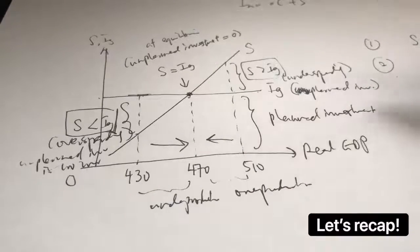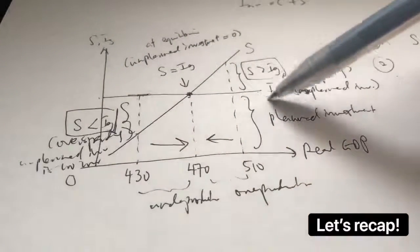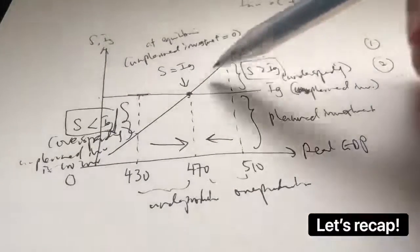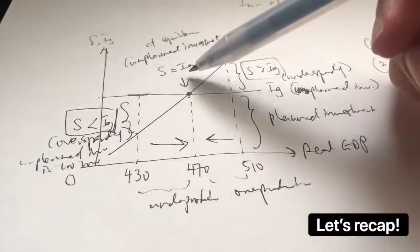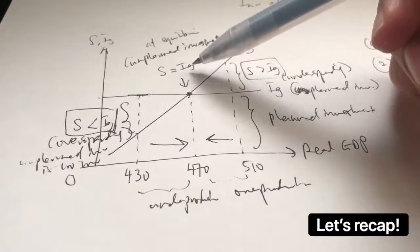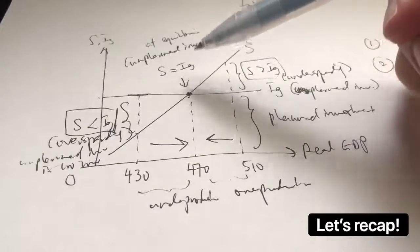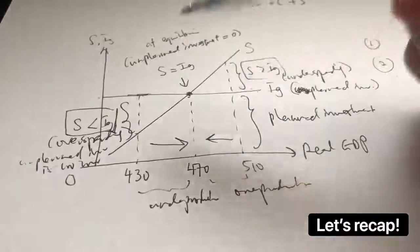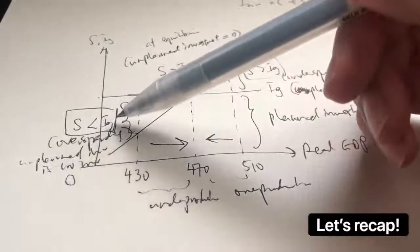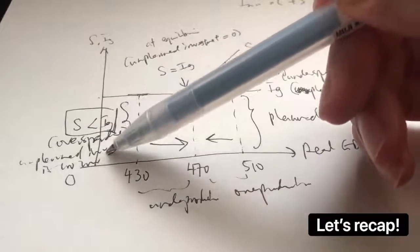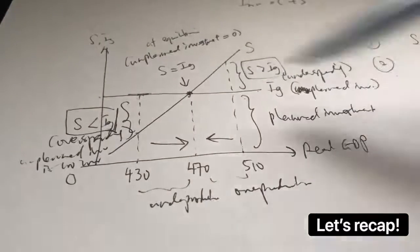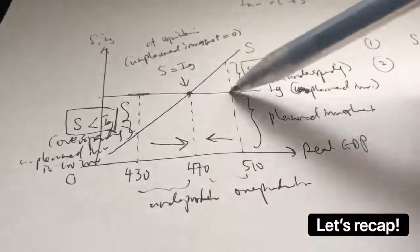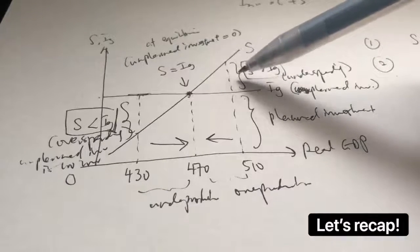To summarize the diagram: the straight horizontal line is planned investment (IG). It intersects the upward-sloping savings curve (S) at equilibrium, where S equals IG. At that intersection, planned investment equals actual investment, so unplanned investment is zero. In disequilibrium cases, when savings is less than planned investment, unplanned investment is too low; when savings exceeds planned investment, unplanned investment is too high.